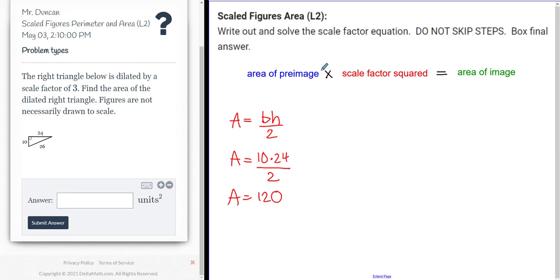So right here, where it says the area of the pre-image, I guess I should have done that in blue, I'm going to substitute 120 right here.